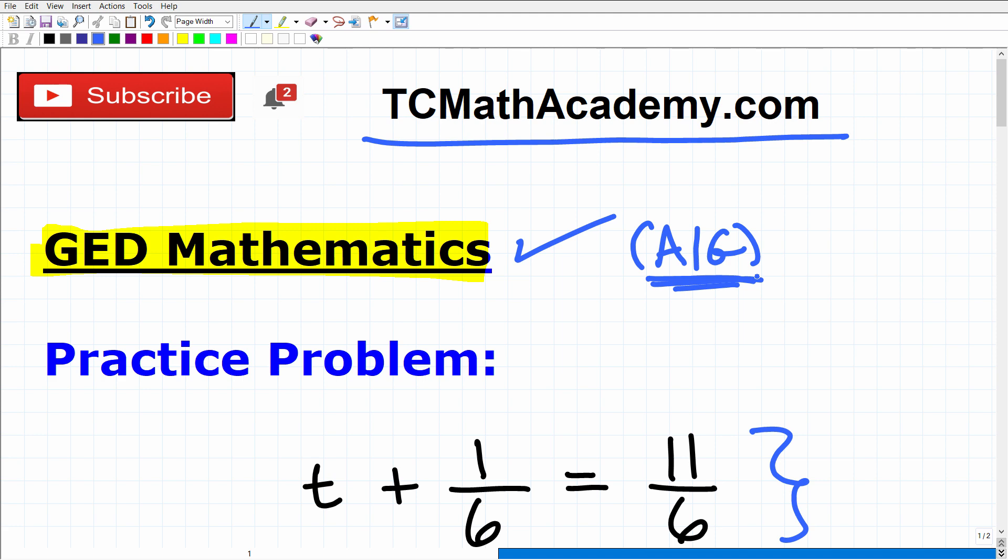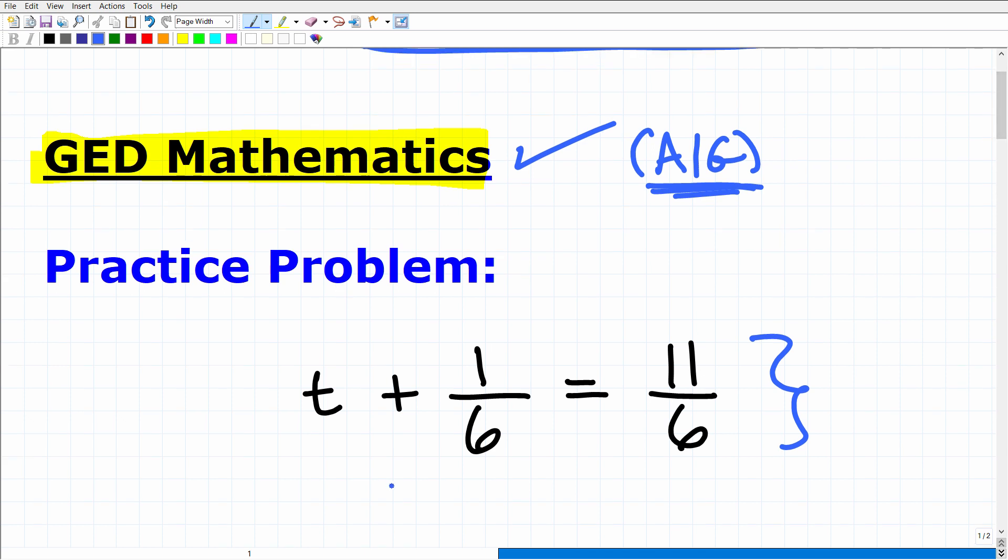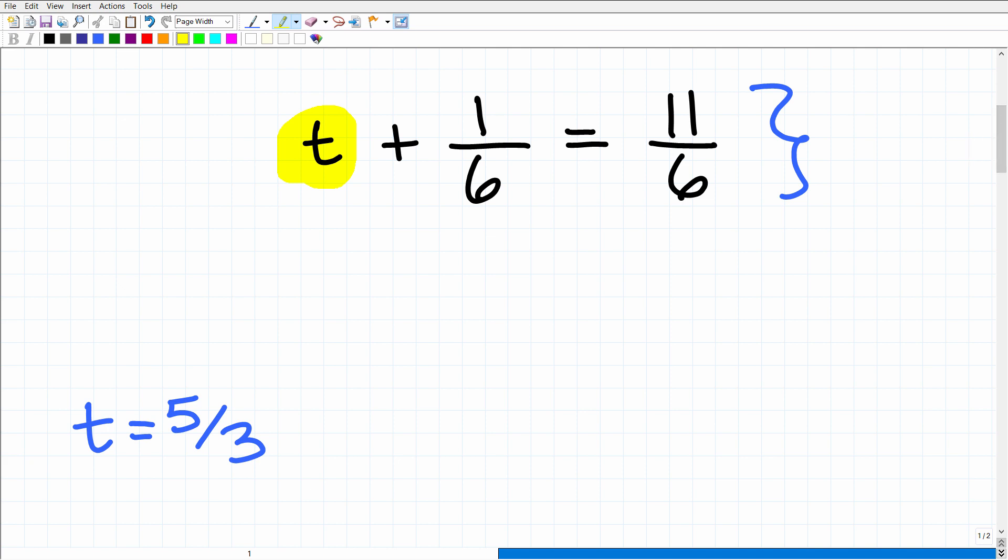But let's go ahead and get into this problem. So what we have here is a basic algebraic equation. What we're trying to do is solve for the variable T. So if we just look at it on its surface, T represents a number. That's what a variable is in algebra. So you're thinking, what number plus 1/6 will give us 11/6? You can probably think about this and reason through, maybe guess and check to get the actual value. But we're going to talk about two ways you can solve this equation. The answer here is 5/3. So T is equal to 5/3.